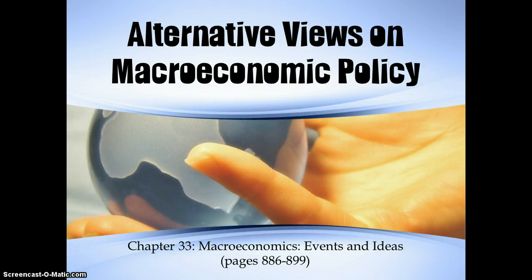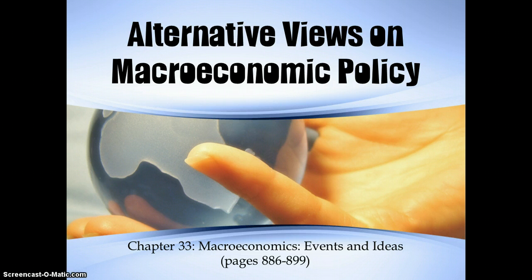Alright, welcome back. Today we're going to look at alternative views on macroeconomic policy. We're going to look at a couple of different theories, models, and approaches that economists have used to try and make sense out of this macroeconomy. This information will be found in your book, Chapter 33, Macroeconomics, Events and Ideas, and the page number is listed there at the bottom.